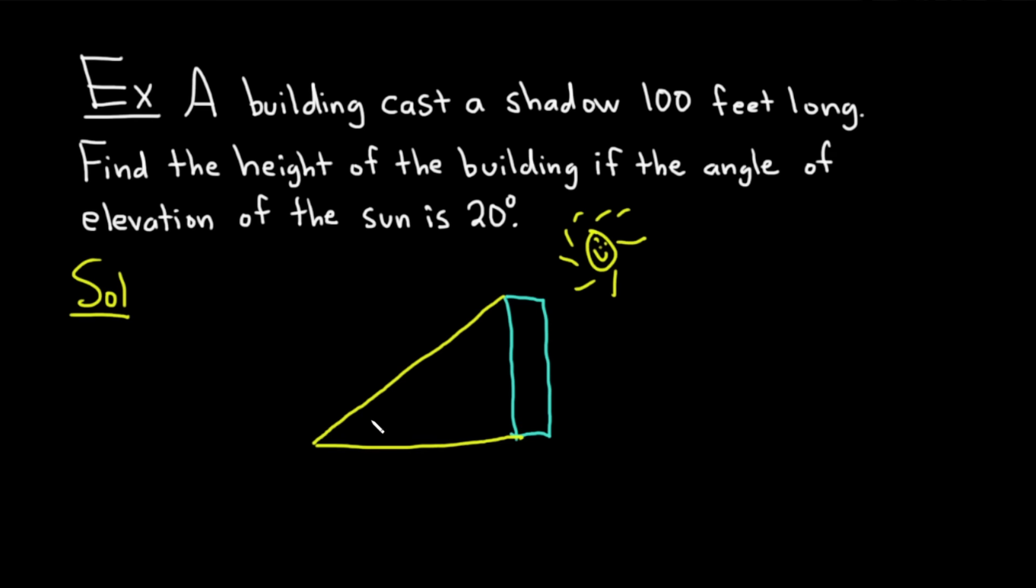And then here's our angle. This is the angle of elevation at 20. The angle of elevation of the sun. And we have to find the height of the building. So I'm going to call that H. And we know that the shadow is 100 feet long. So based off this picture, we have to find H.